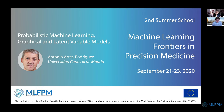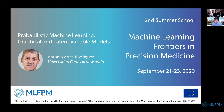It's my pleasure to introduce the first short course at our summer school, given by Antonio Artes Rodriguez. He will give an introduction on probabilistic machine learning, and he's one of the experts for this topic. He's a full professor at the Universidad Carlos III de Madrid, specializing in signal theory, communications, and information theory, which reaches deep into probabilistic machine learning. He has worked on more than 100 research projects in this domain.